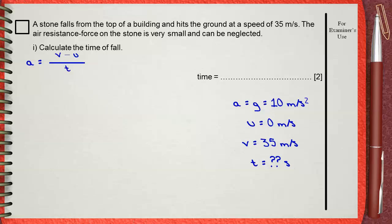By a very simple modification, you can see that T time equals V minus U divided by A. According to our givens, V minus U is 35 minus 0 divided by the acceleration due to gravity 10. This will give you the time of 3.5 seconds.